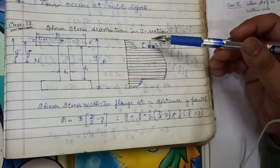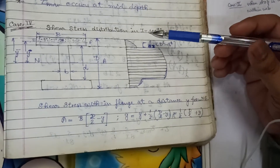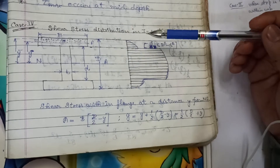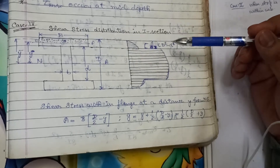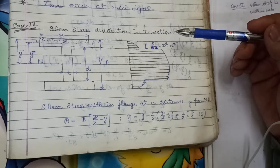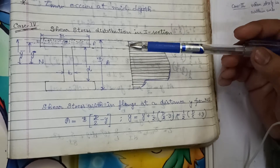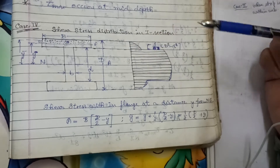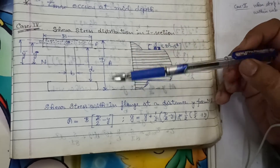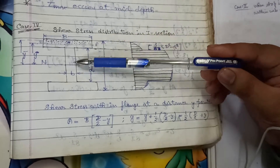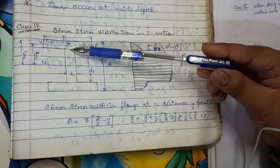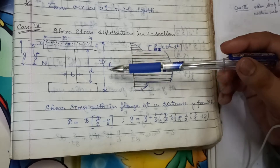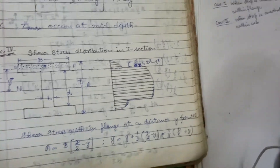In the previous lecture we had seen how the shear stresses are distributed in rectangular section, circular section, and triangular section. In today's lecture we are going to see how the shear stresses are distributed in I-section. We know the I-section consists of a top and bottom flange and a web in the center of the section. So as we know, what is the formula for shear stress?